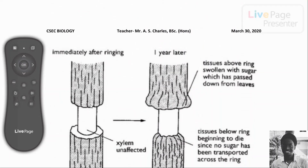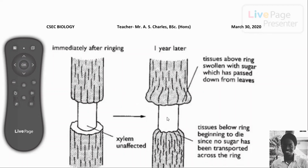To illustrate: if an individual uses a cutlass to ring a plant — removing a ring of bark and underlying phloem from the stem while leaving the xylem unaffected — after one year, the tissues above the ring become enlarged or swollen because sugars transported from the leaves accumulate there and cannot cross the ring. The tissues below the ring begin to die since no sugars or nutrients are transported to them. The structure removed that prevented transport from above to below the ring is the phloem — this is evidence that phloem transports materials from sources to sinks.